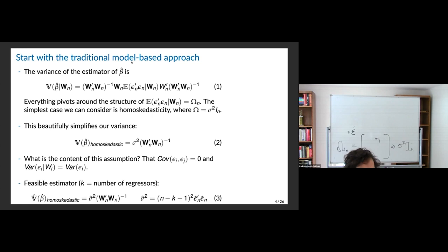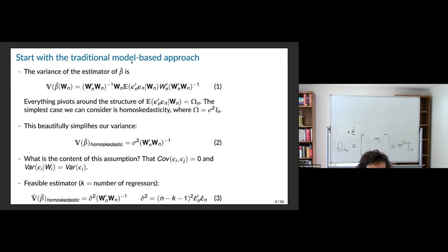The content of the homoscedasticity assumption is that the error terms across observations have zero covariance, and the variance of epsilon is just constant irrespective of the W's. It doesn't matter what treatment you get — you always have the same variance. Your treatment is kind of just moving you up and down because the rest of you doesn't vary. So that's a pretty strong assumption. The typical estimator is to plug in sigma squared hat, calculated by taking the squared sum of residuals — where epsilon hats are the residuals from the regression — divided by N minus K minus one.